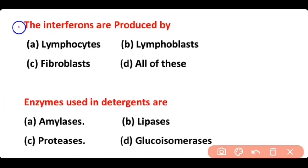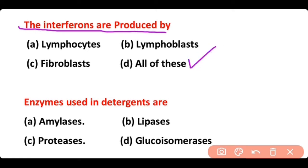Interferons are produced by: lymphocytes, lymphoblasts, fibroblasts, or all of these. The correct answer is option D. Interferons can be produced by all three cells — lymphocytes, lymphoblasts, and fibroblasts.